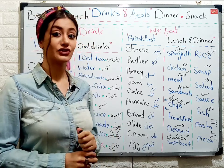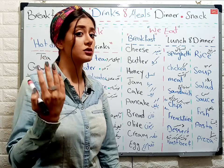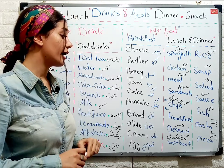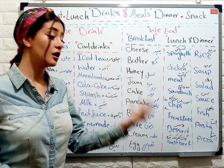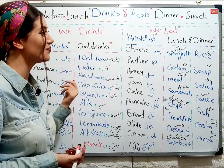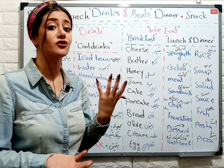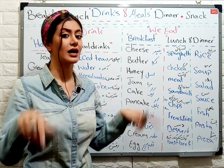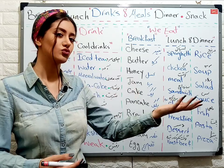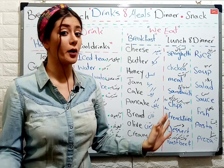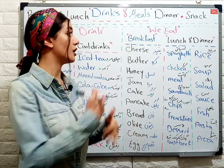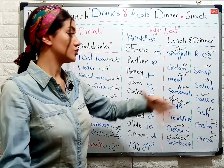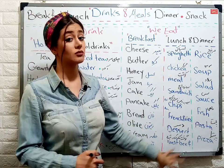Rice — برنج. Soup. Salad. Sauce — سس. Fish — ماهی. Pasta and pizza. So now: what do you have for your lunch? What do you eat for your dinner? What do you eat on the weekend? آخر هفته که دور هم جمع میشید با خانواده‌تون، با دوستاتون، یا میرید رستوران — چی میخورید؟